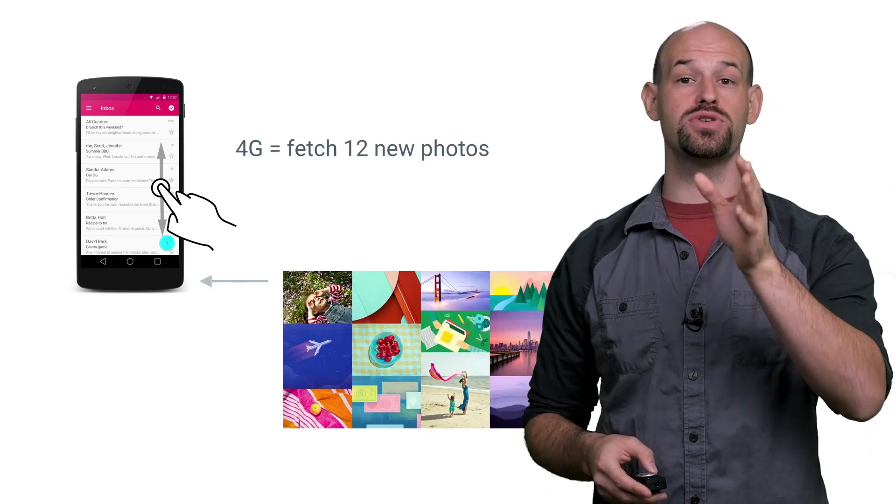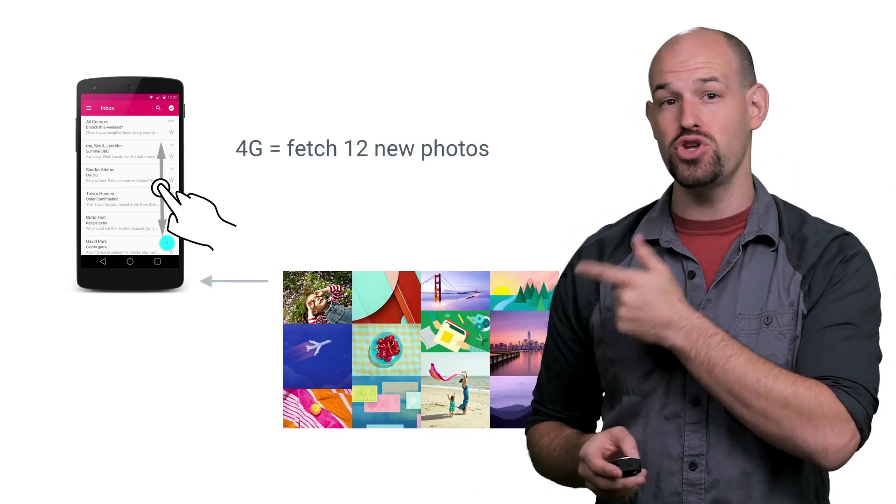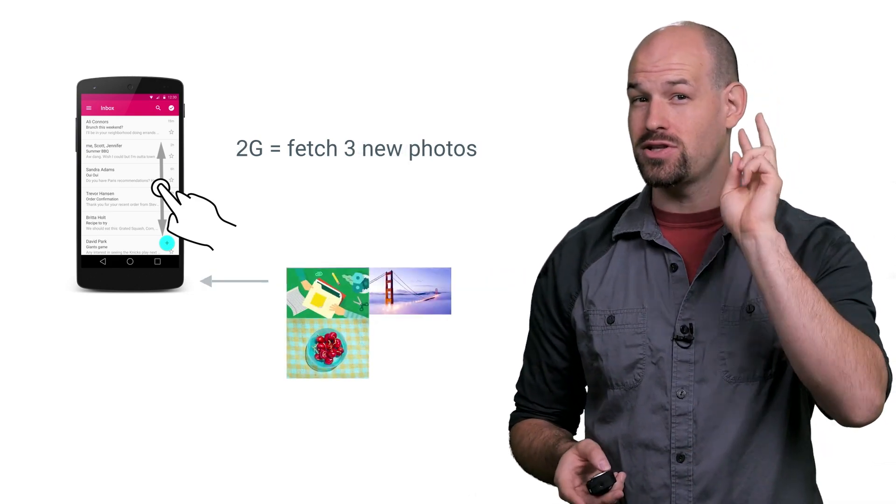For example, if the user is on a 4G connection, you may be able to connect and fetch 12 new photos, which takes the same amount of time as prefetching three photos on a 2G connection.